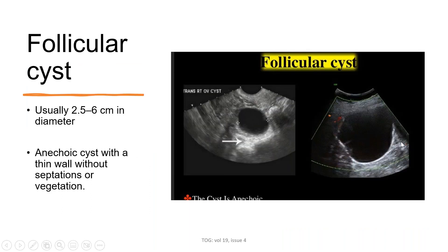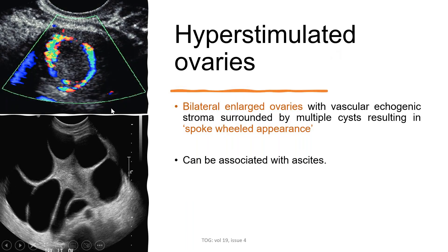Follicular cysts usually appear as simple, anechoic cysts measuring about 2.5 to 6 cm in diameter, with thin walls and without any septation or vegetation. In hyperstimulated ovaries, you can see bilaterally enlarged ovaries with vascular echogenic stroma surrounded by multiple cysts — each cyst surrounded by vascular echogenic stroma, giving a 'spoked-wheel' appearance. Ascites is also associated.